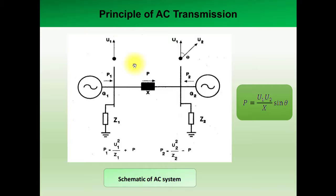So if you want to transmit power for longer distances, there are two options: either reduce the reactance or you can increase the voltage levels. So this is the basic principle of AC transmission systems.